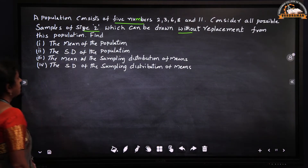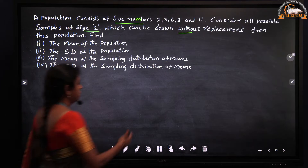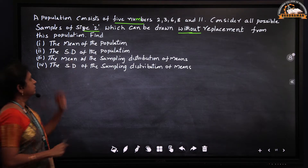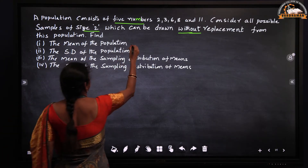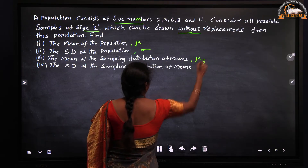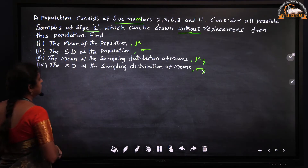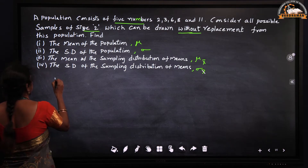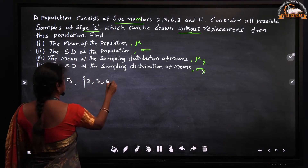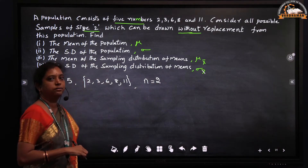A population consists of 5 numbers: 2, 3, 6, 8, and 11. Consider all possible samples of size 2 which can be drawn without replacement from this population. We have to find the mean of the population (mu), the standard deviation (sigma), the mean of the sampling distribution of means (mu x-bar), and the standard deviation of the sampling distribution of means (sigma x-bar). So capital N is equal to 5 and small n is equal to 2, without replacement.